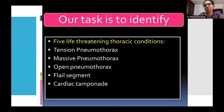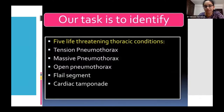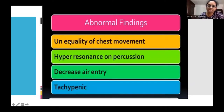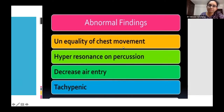The conditions identified in this survey include pneumothorax, tension pneumothorax, hemothorax, flail segment, and cardiac tamponade. On inspection you notice inequality in chest movement; auscultation reveals decreased air entry; percussion shows a hyper-resonant note; the patient is tachypneic and desaturating. What is your likely diagnosis from these findings?